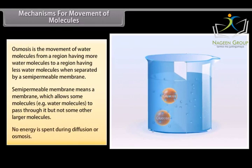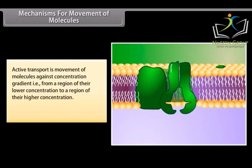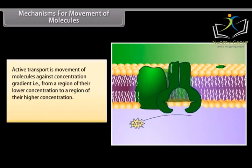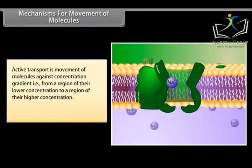No energy is spent during diffusion or osmosis. Active transport is movement of molecules against concentration gradient, that is, from a region of their lower concentration to a region of their higher concentration. Energy is required in active transport.